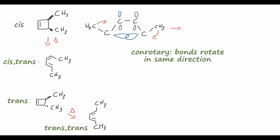We can then draw the final product: the carbon backbone, the two rear carbons still sp2 hybridized with p orbitals forming pi bonds, and the front carbons now rehybridized to sp2 with their own p orbitals. Because both methyl groups have rotated clockwise, the methyl group on the left is inside the ring — the cis methyl group — and the methyl group on the right is arranged trans, going out of the ring.